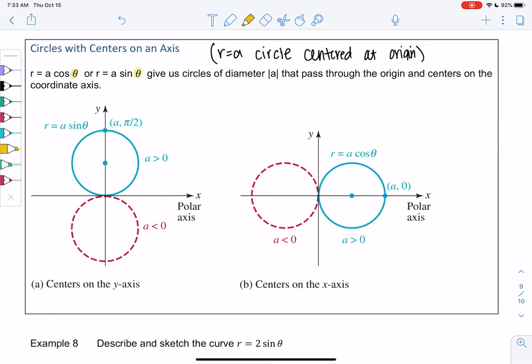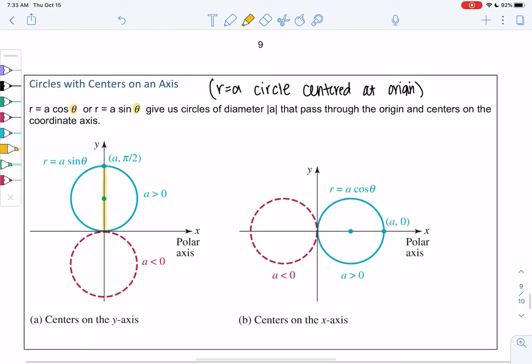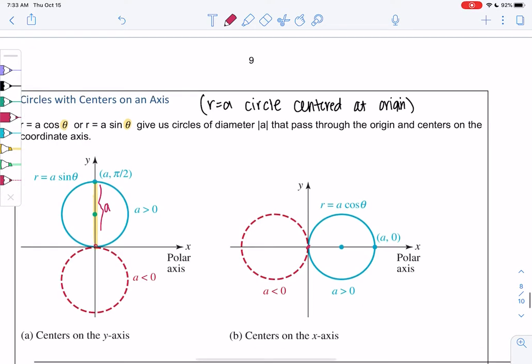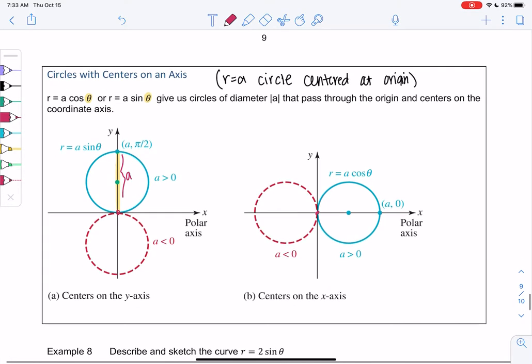They have a diameter of A, so the radius is halfway. They pass through the origin. You see they're all touching the origin but they have a different center. They just kind of rotate, so they might be above, below, right, or left, depending on sine or cosine or positive or negative.